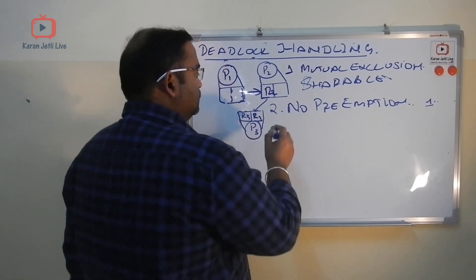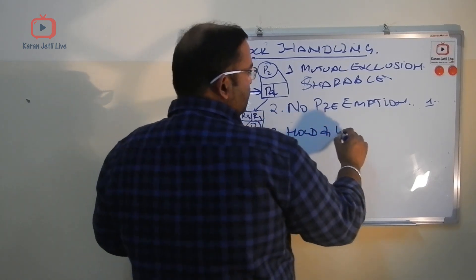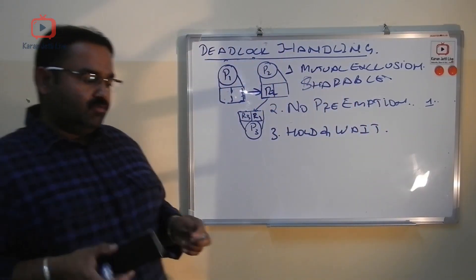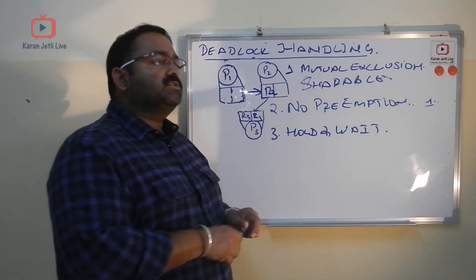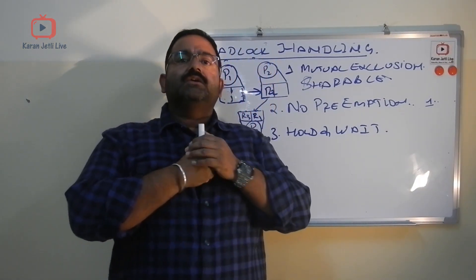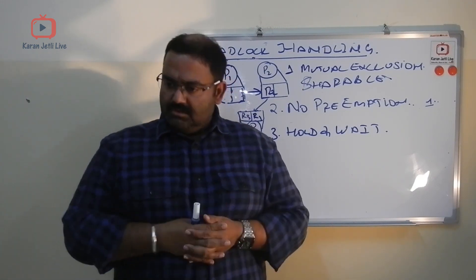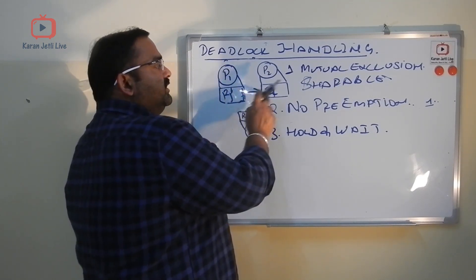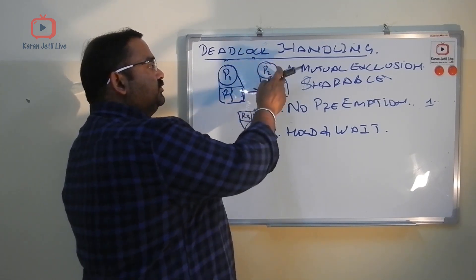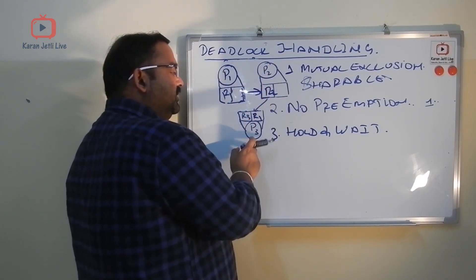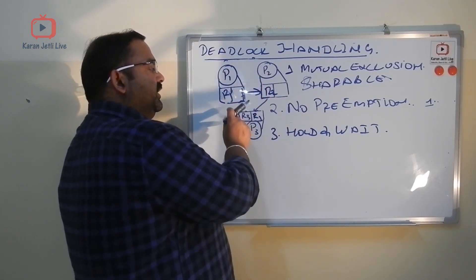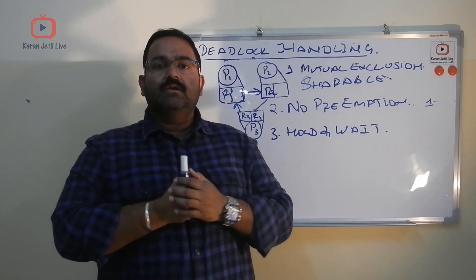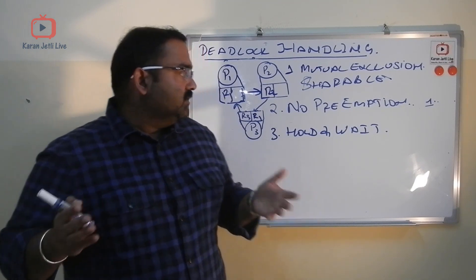The third condition is hold and wait. A process is holding one resource and requesting additional resources. P1 is holding R1 and waiting for R2, P2 is holding R2 and waiting for R3, and P3 is holding R3 and waiting for R1 — they are all holding and waiting, forming a cycle.